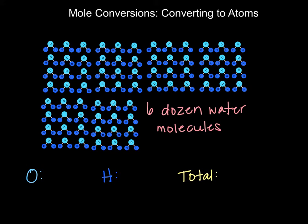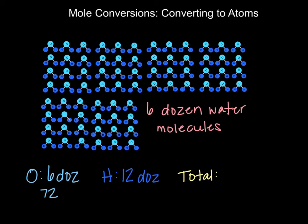Let's expand this one more time. I've increased to six dozen water molecules. When I count up all of my oxygens, I should notice that I have six dozen oxygen atoms, which is 72 individual oxygen atoms. Since I have two hydrogens in every water molecule, I have 12 dozen hydrogen atoms, which is 144 individual hydrogen atoms. Six dozen water molecules with three atoms each gives me 18 dozen total atoms.